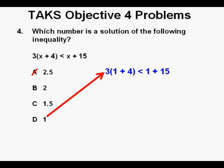So we have 3 times quantity 1 plus 4 is less than 1 plus 15. That simplifies to 3 times 5 is less than 16. And finally that becomes 15 is less than 16. Is 15 less than 16? Of course it is. So we circle our correct answer D.